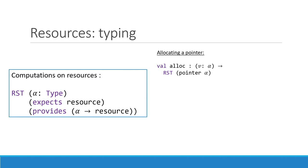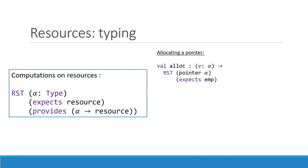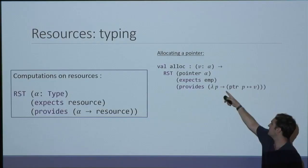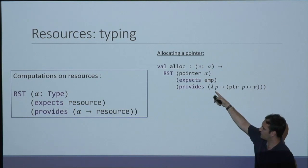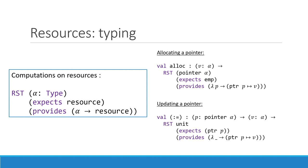Let's give some examples. For the alloc function — which takes a value and returns a pointer to that value — how do we specify that using resources? At the beginning you expect nothing: the allocation function should work anywhere, so you expect the empty resource. Then you provide the resource which is a pointer pointing to your value. You can talk in your final resource about the value returned by the function. For pointer update — take a pointer and a new value — it's a stateful function returning unit. It expects the pointer P with any value inside, and then in the end we have a pointer that points to V.